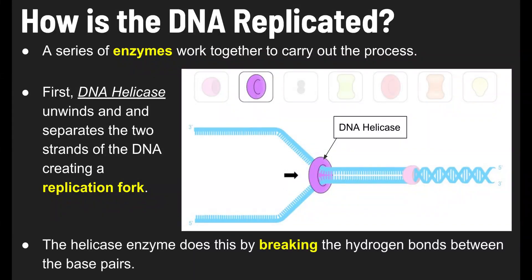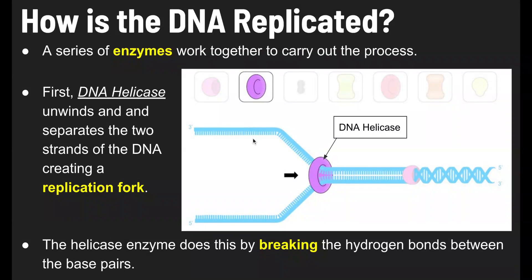Helicase does this by breaking the hydrogen bonds that hold together the base pairs. These tick marks represent the bases, and they're held together by hydrogen bonds. Helicase breaks those bonds, and that's what allows the two strands to separate. This is step one of DNA replication.